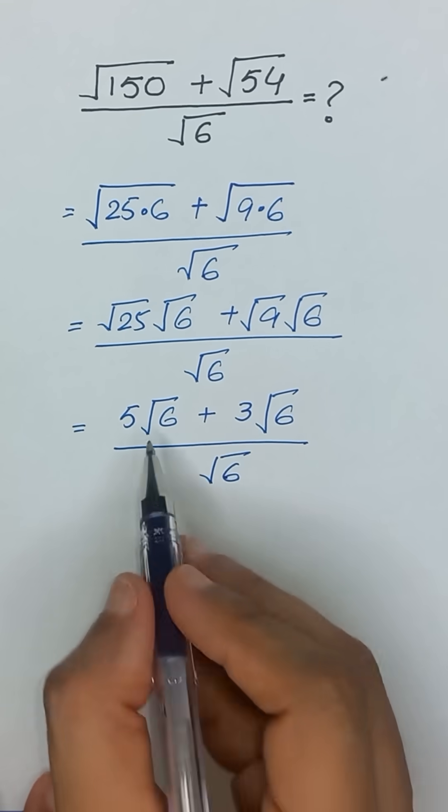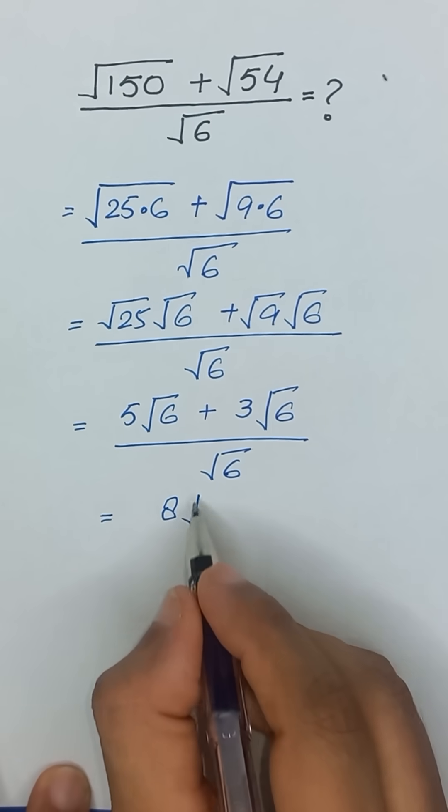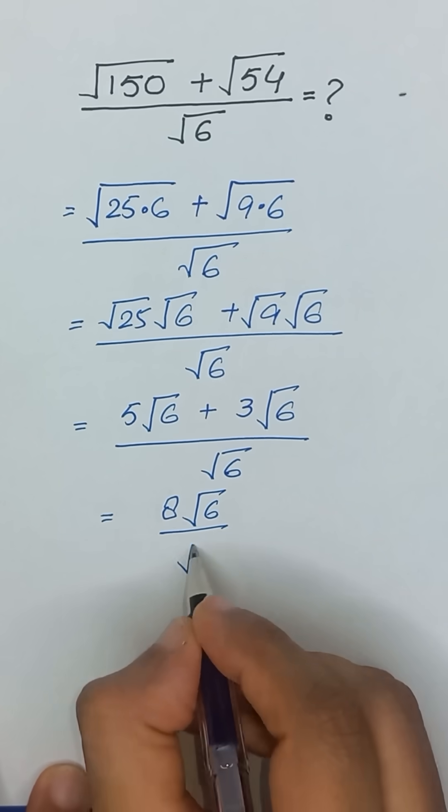These are like terms so we can add them, and it will become 8 times square root of 6 divided by square root of 6.